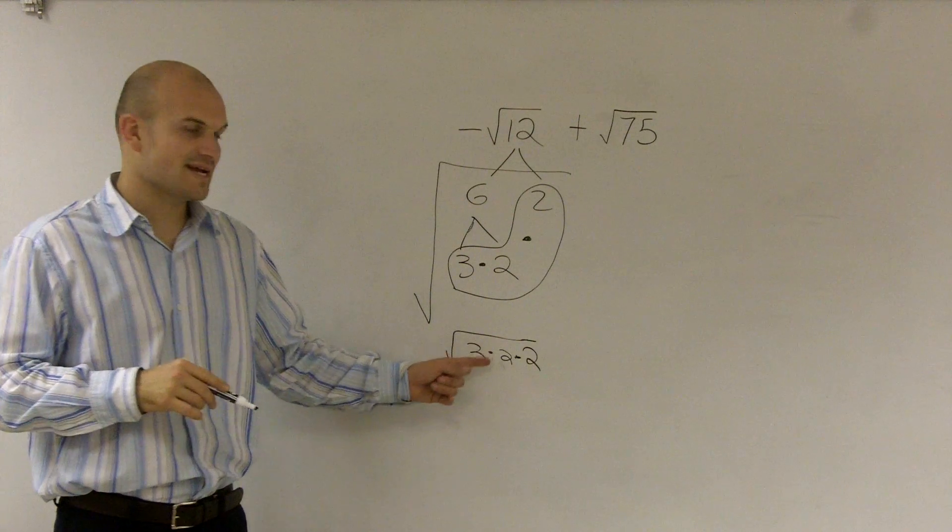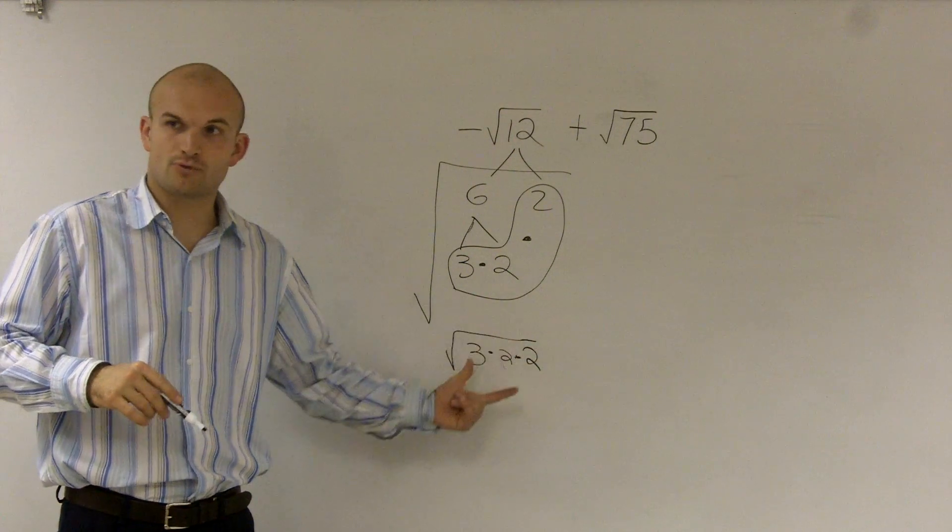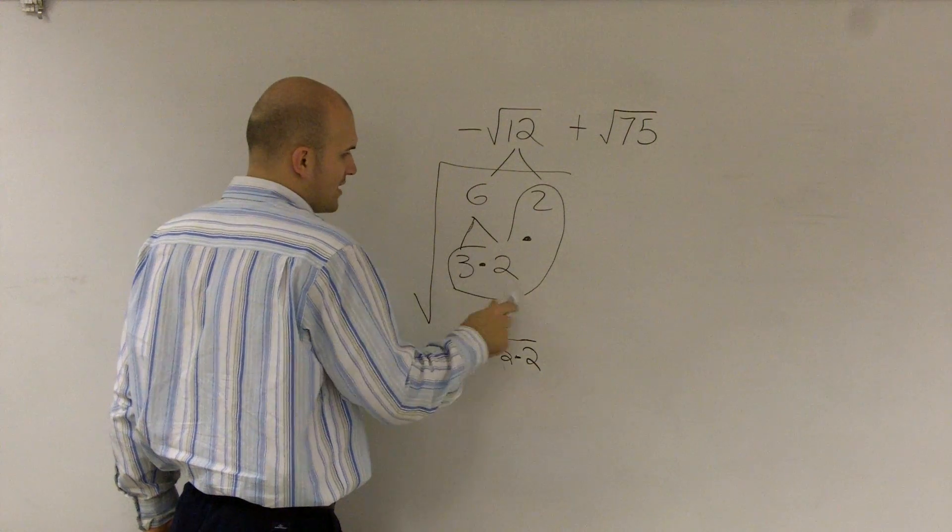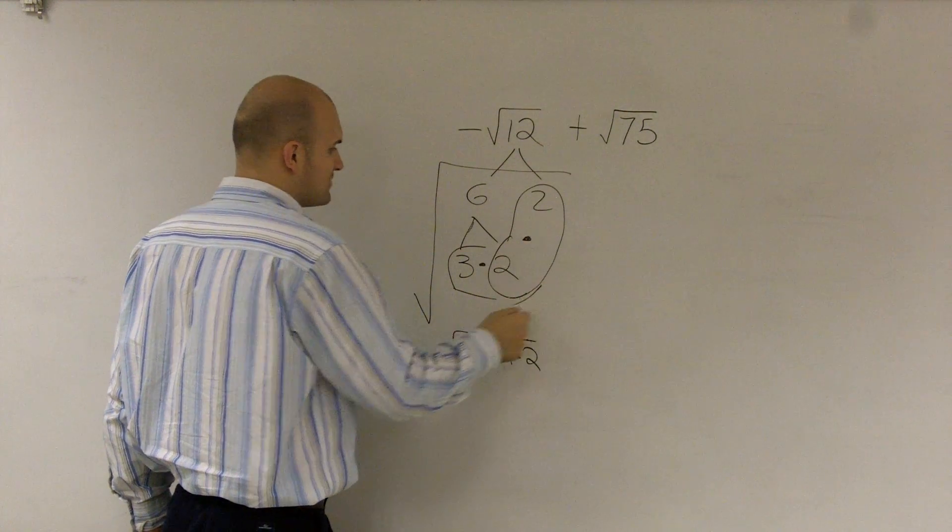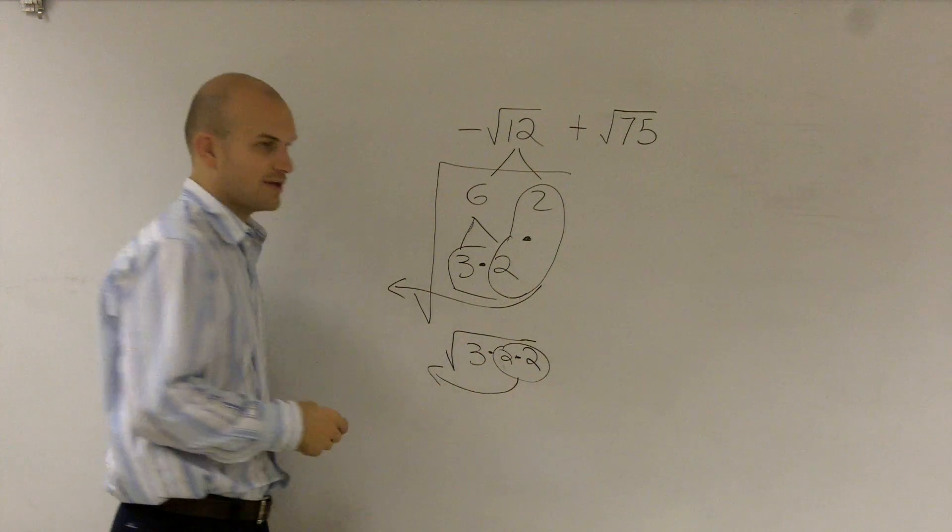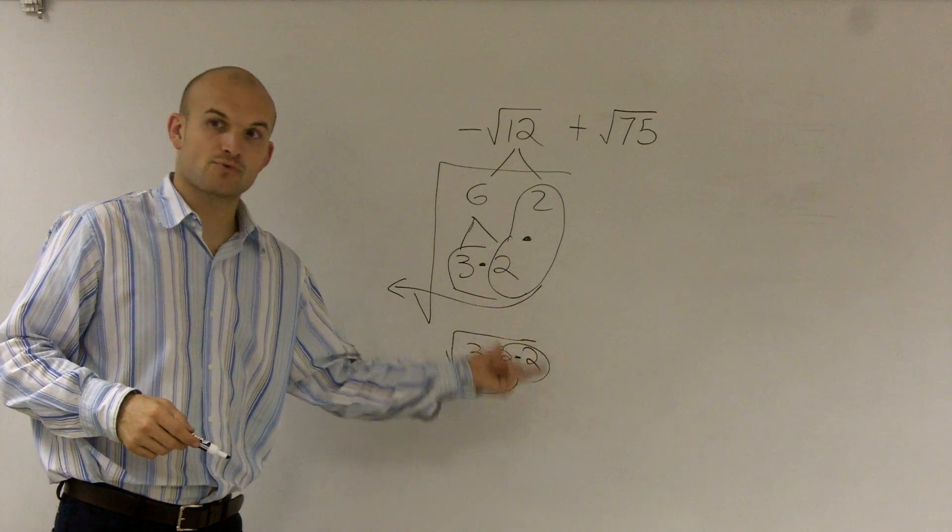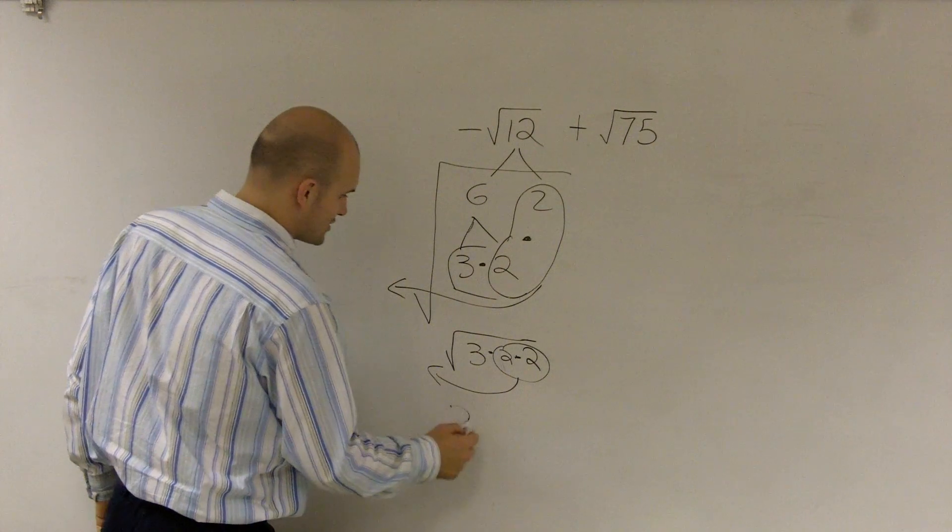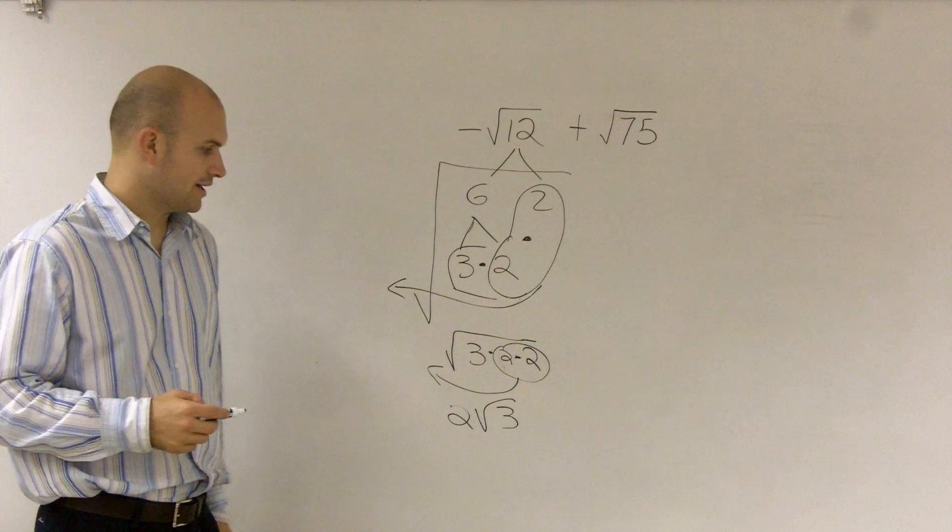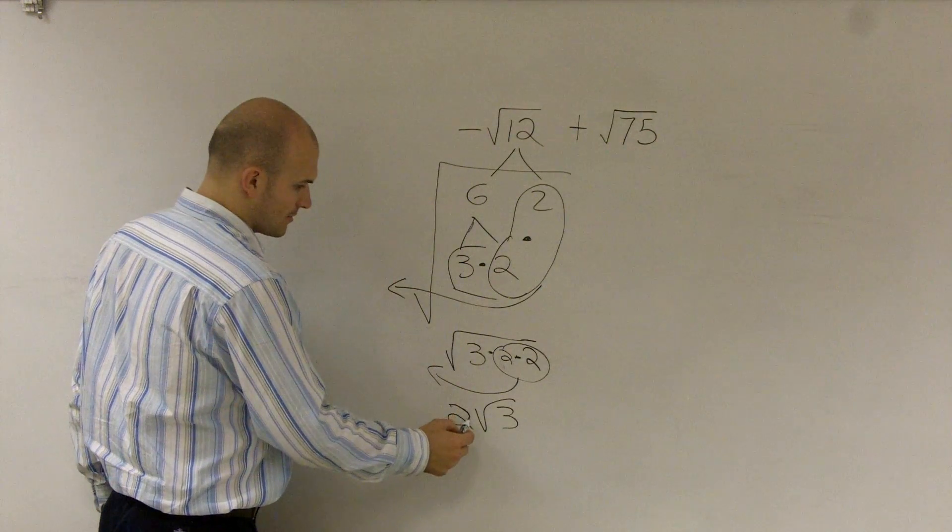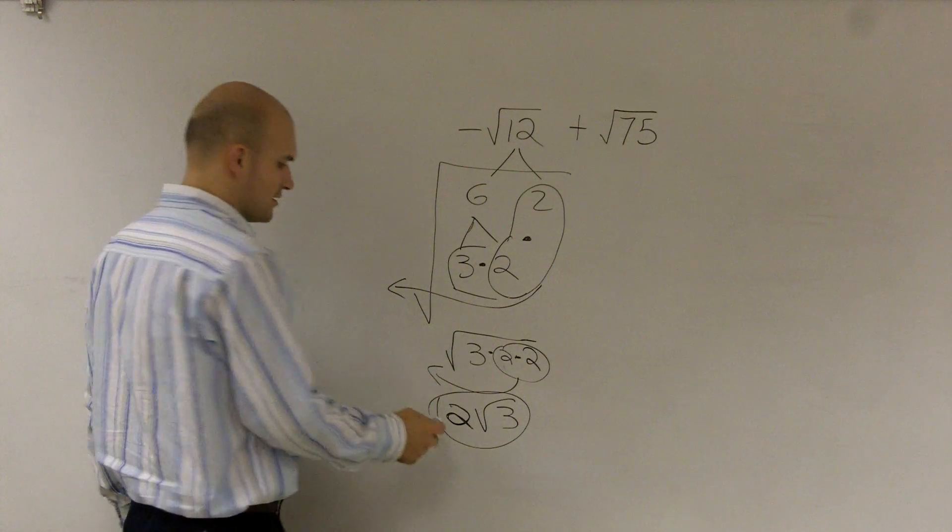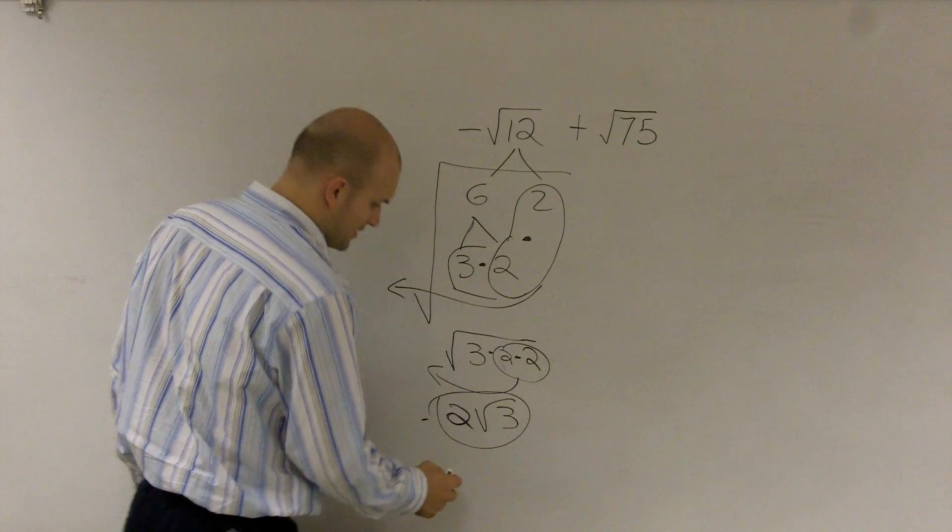So what I have is since 2 times 2 is 4 and the square root of 4 is 2, what we say is we like to pair these up and then take them out of the square root. So therefore, 2 times 2 is 4. The square root of 4 is 2. So I can write 2 square root of 3, all right? So I have 2 square root of 3. And then over here, actually it's a negative 2 square root of 3.